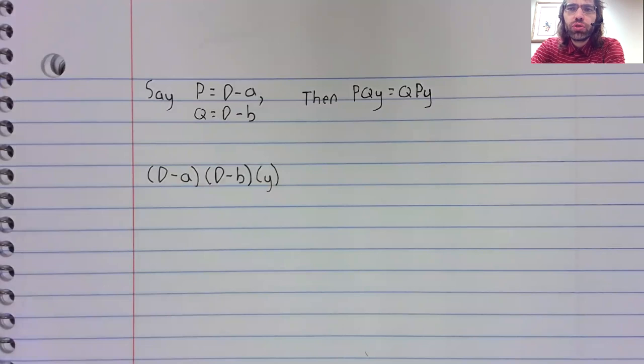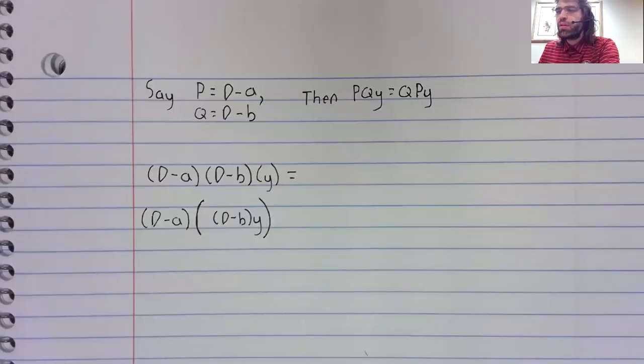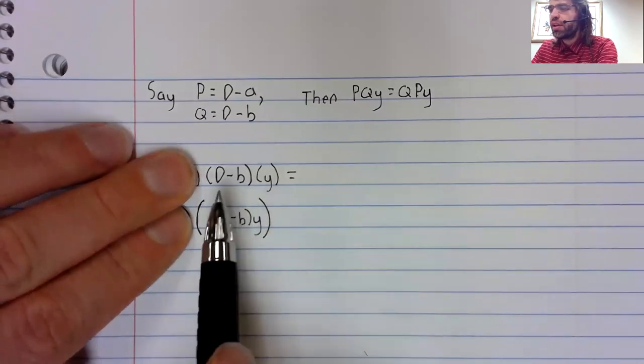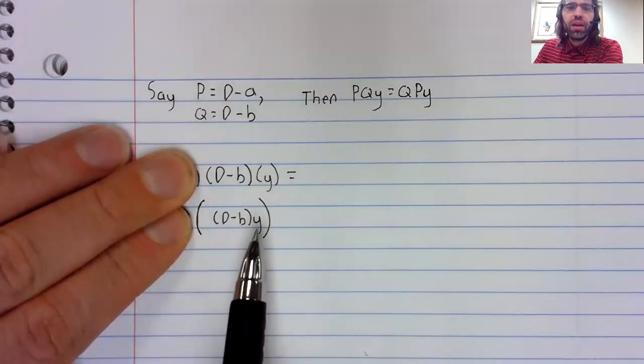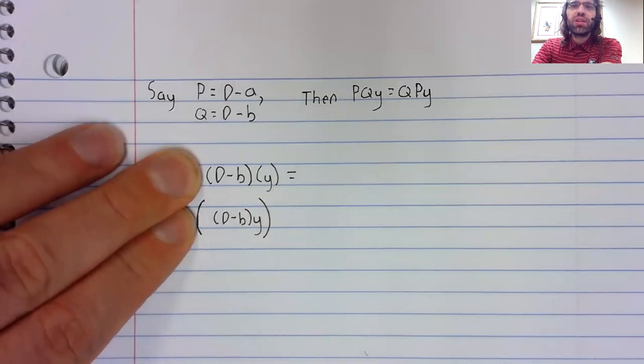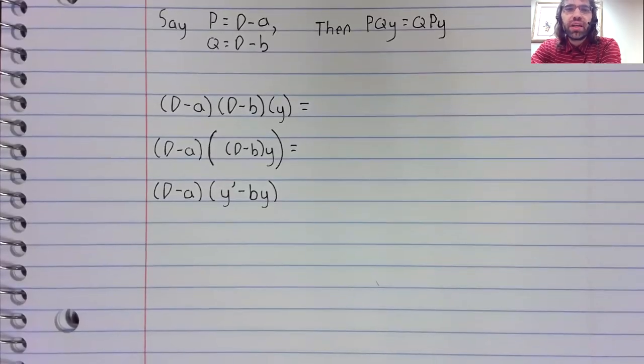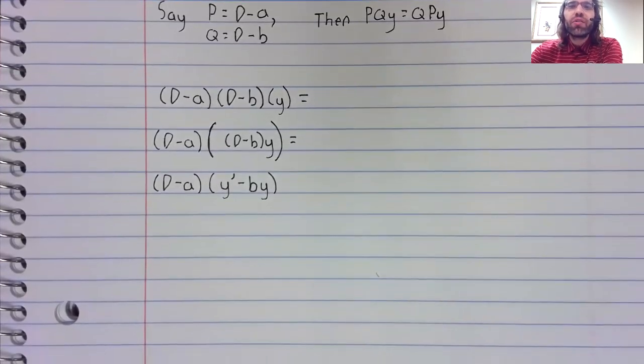Now, composition is associative. So we can put in parentheses and look at these terms first. By definition, d minus b y is this. This is how we defined a linear differential operator.